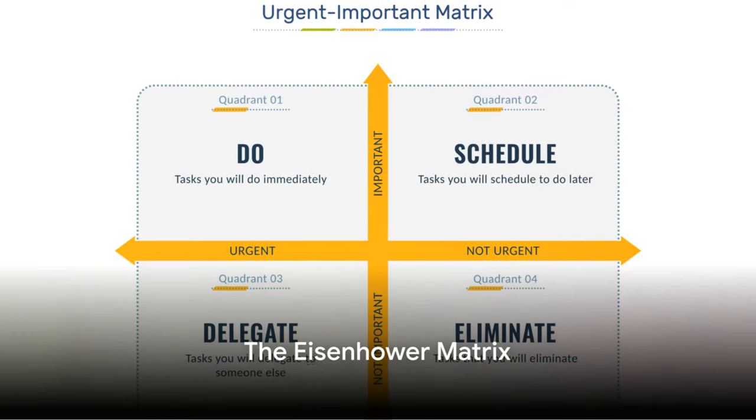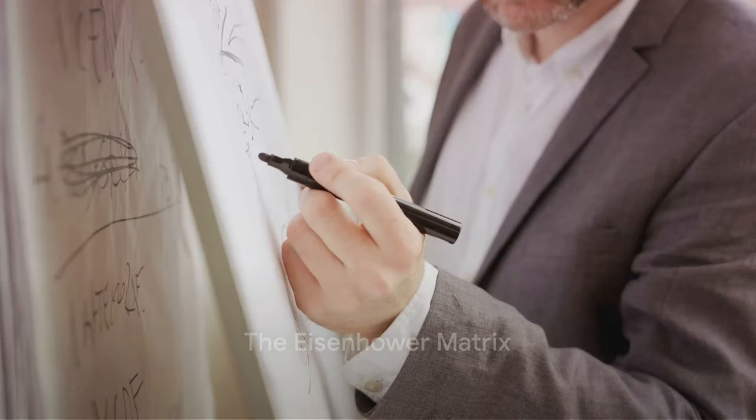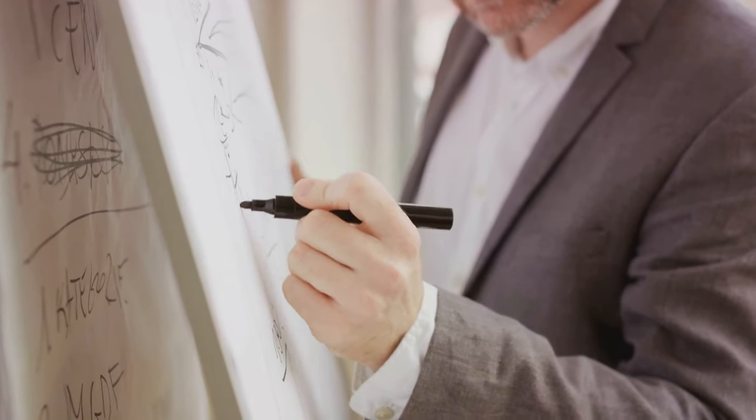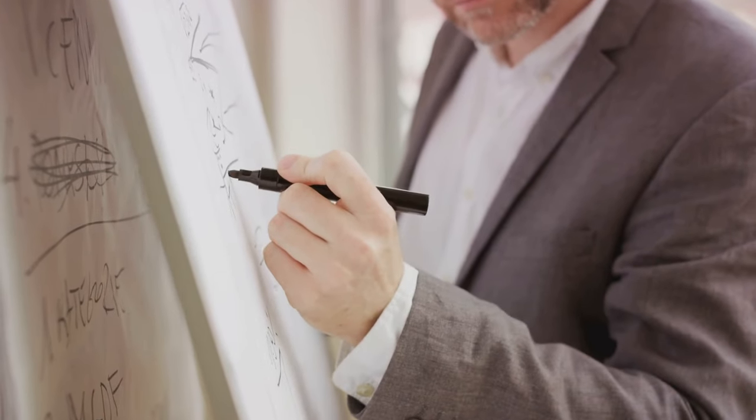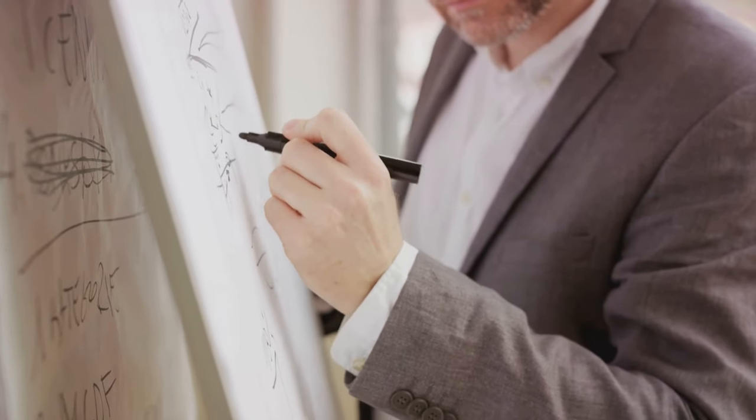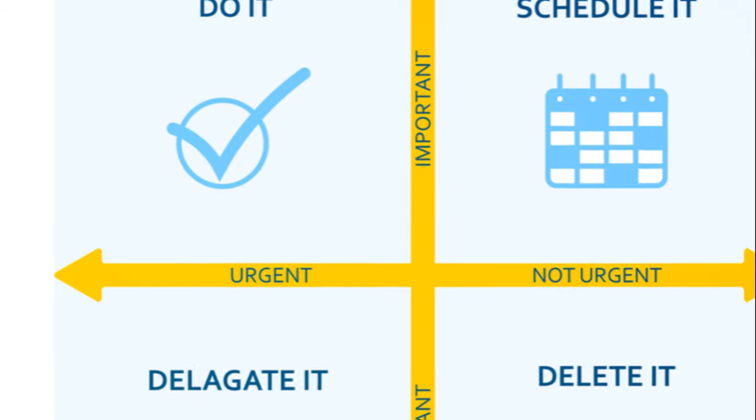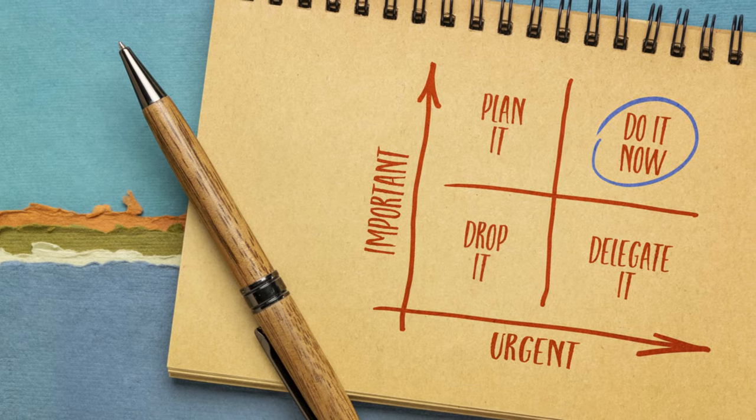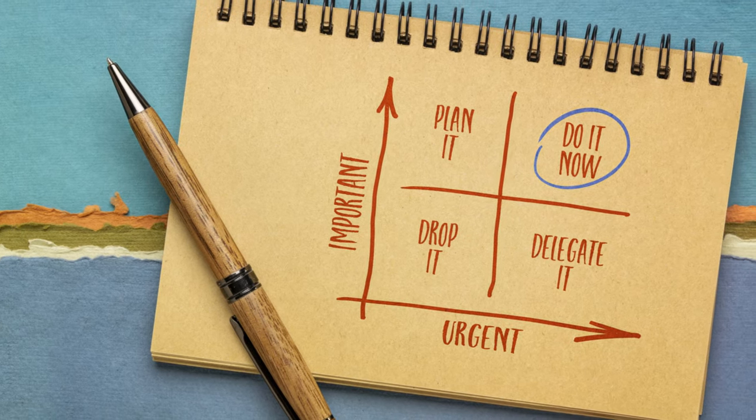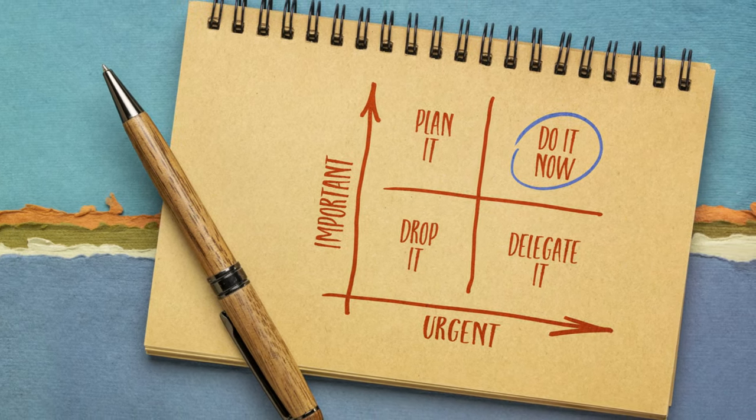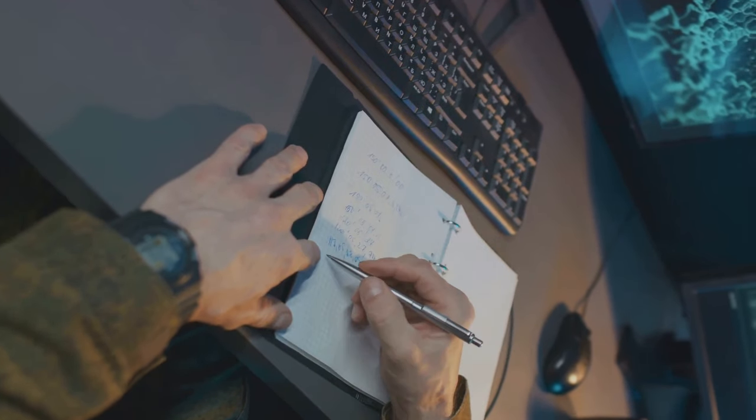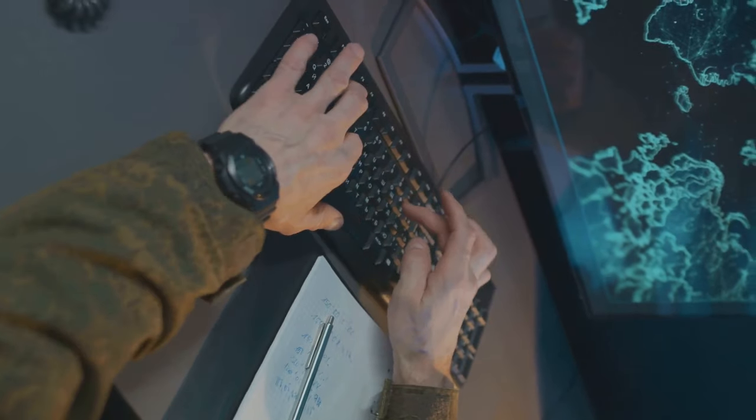How do you decide where to invest your time and energy? A powerful tool to aid in this decision-making process is the Eisenhower Matrix. Named after the 34th President of the United States, Dwight D. Eisenhower, this matrix is a simple yet effective way of organizing your tasks. Imagine a square divided into four quadrants. The vertical axis represents urgency, and the horizontal axis represents importance. By categorizing your tasks within these quadrants, you can gain a clearer understanding of what needs your immediate attention and what can be scheduled for later.